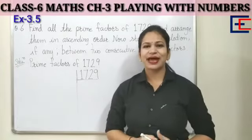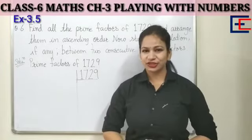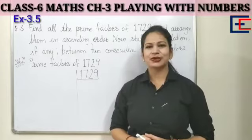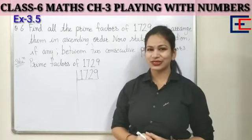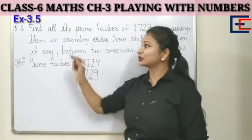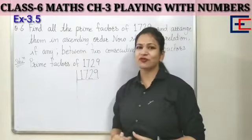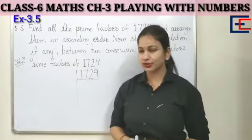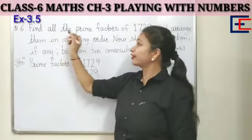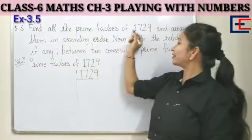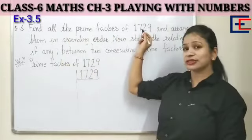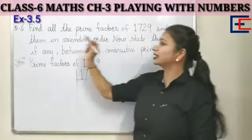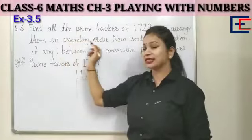Hello viewers, my name is Avantika Sharma, your math tutor. Let's proceed toward today's topic, that is question number six of Exercise 3.5. The question is: find all the prime factors of 1729 and arrange them in ascending order.